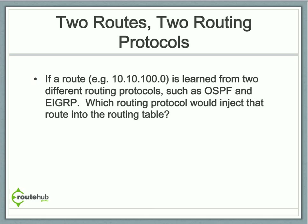So let's say we have two routes and two routing protocols. For example, our network is configured for two different routing protocols such as OSPF and EIGRP, and we have a route such as 10.100.0 that is learned from both of those protocols.